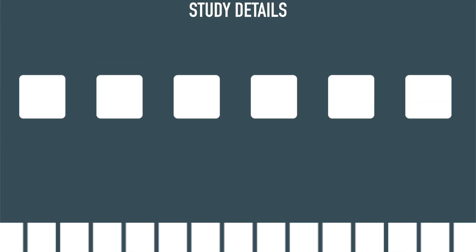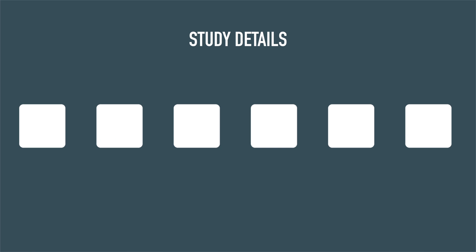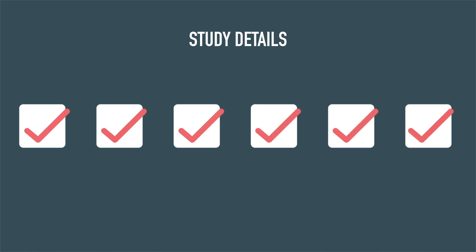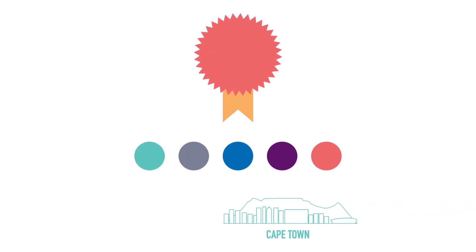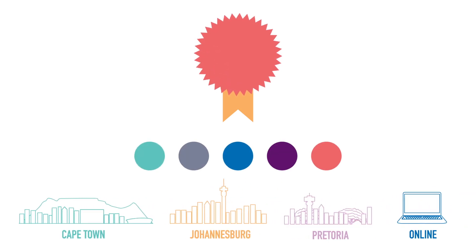Every course has different entry requirements, so this is where you need to detail your study information. This covers things like your highest qualification, what course you are applying for, and the campus you would like to attend.